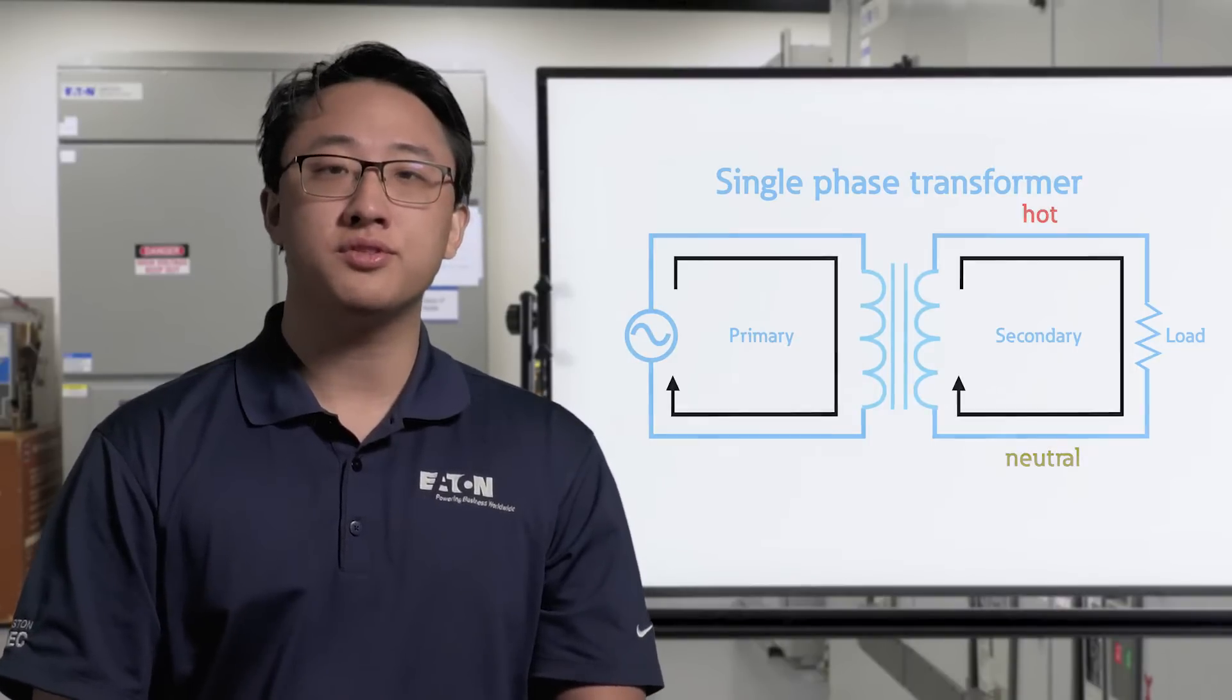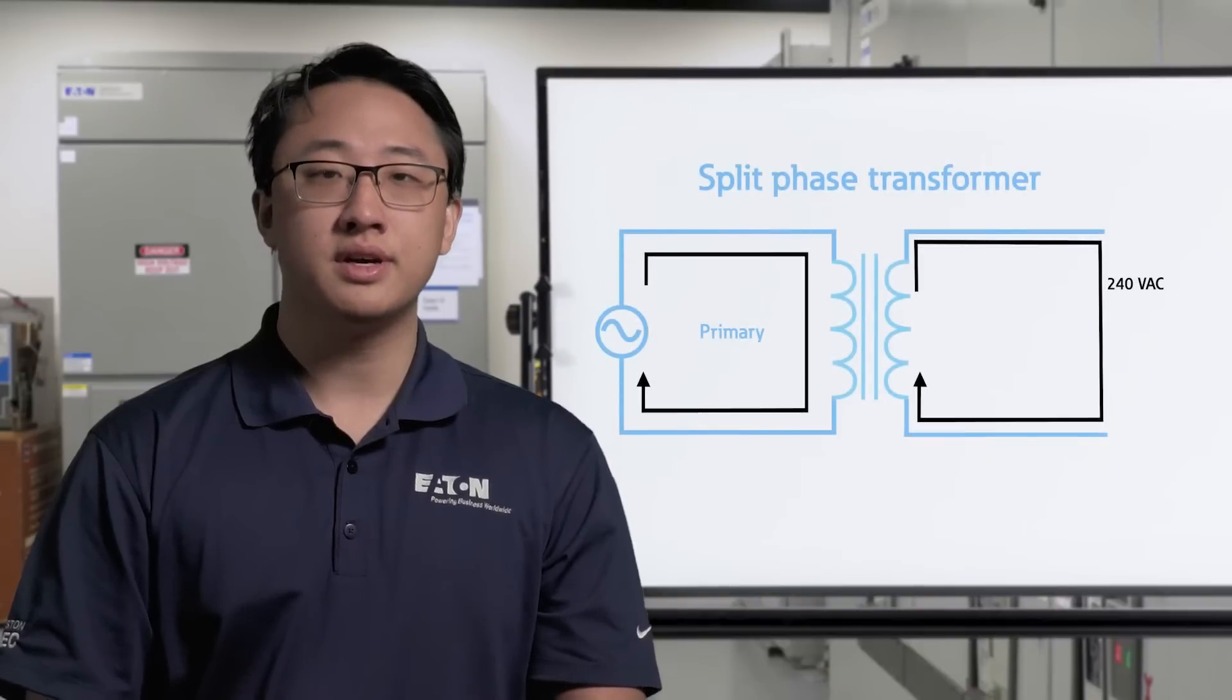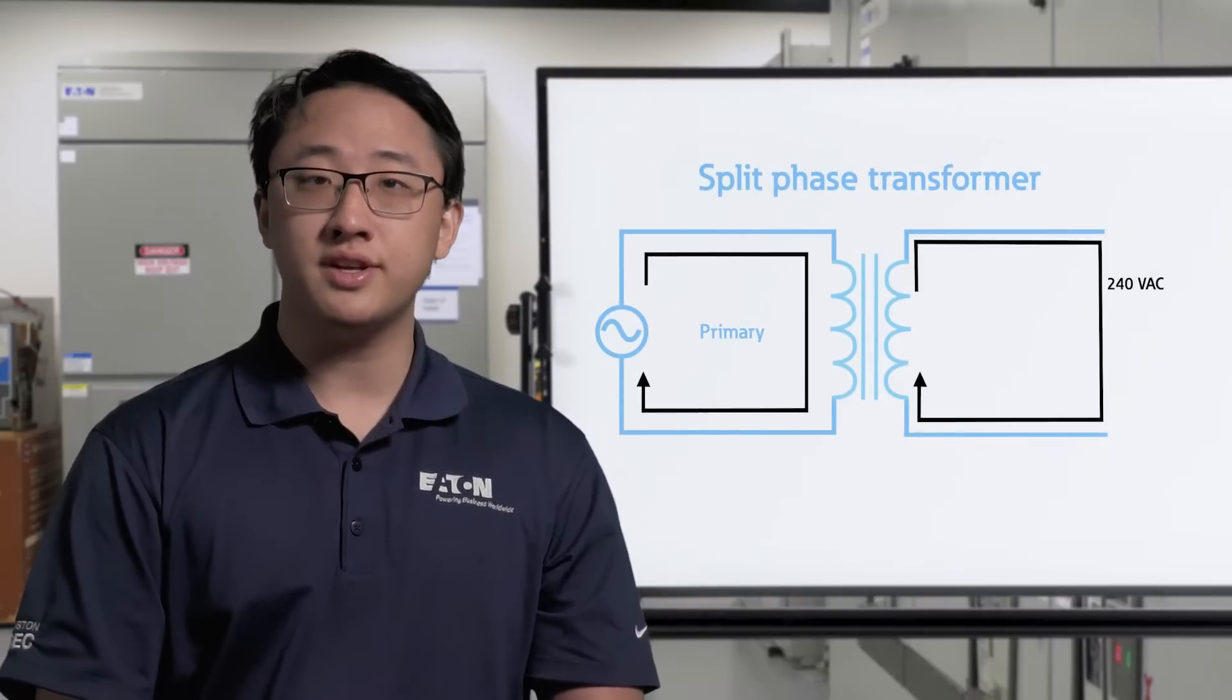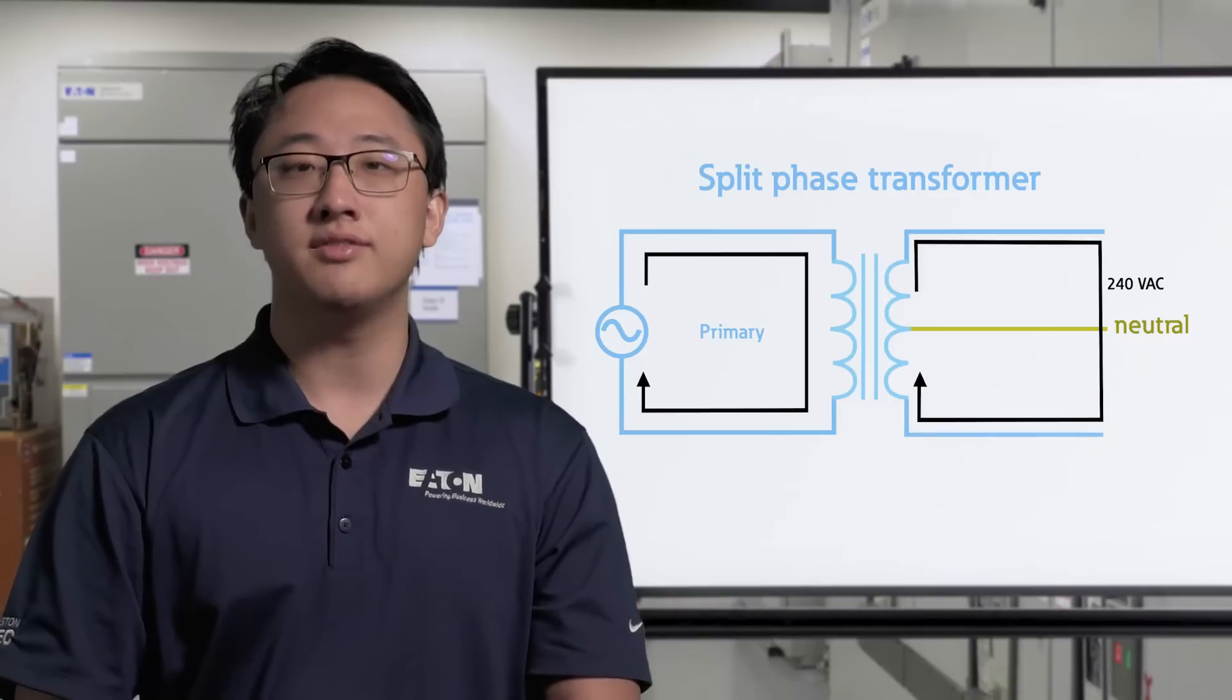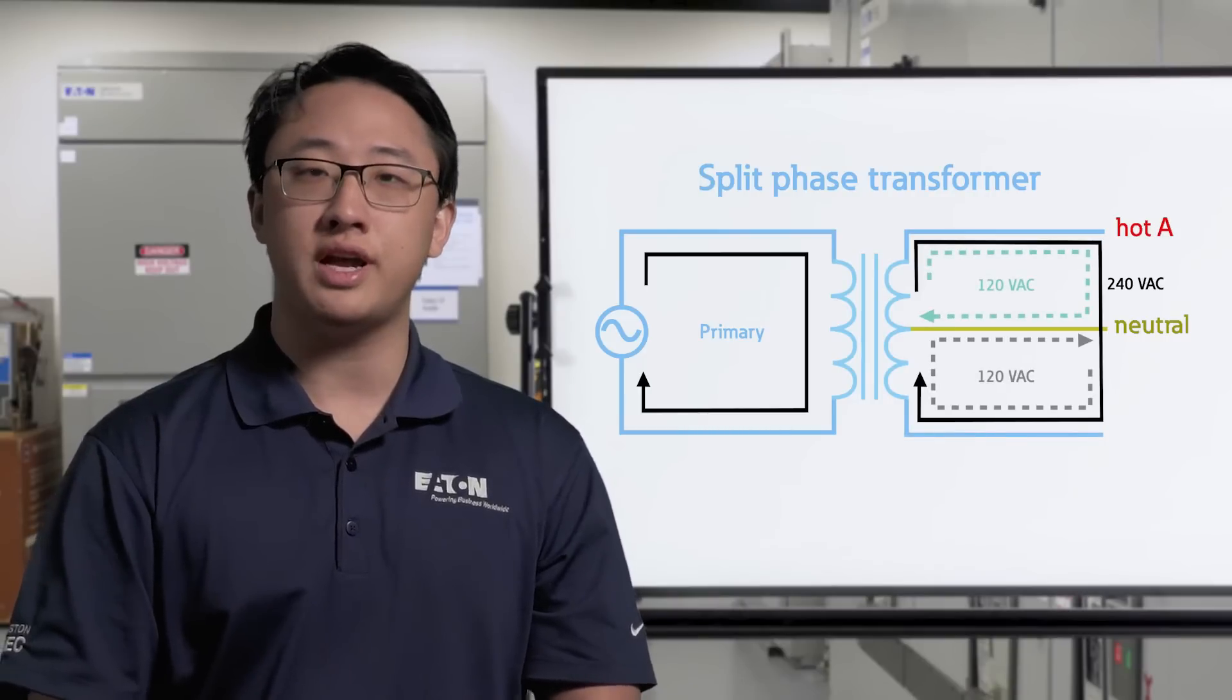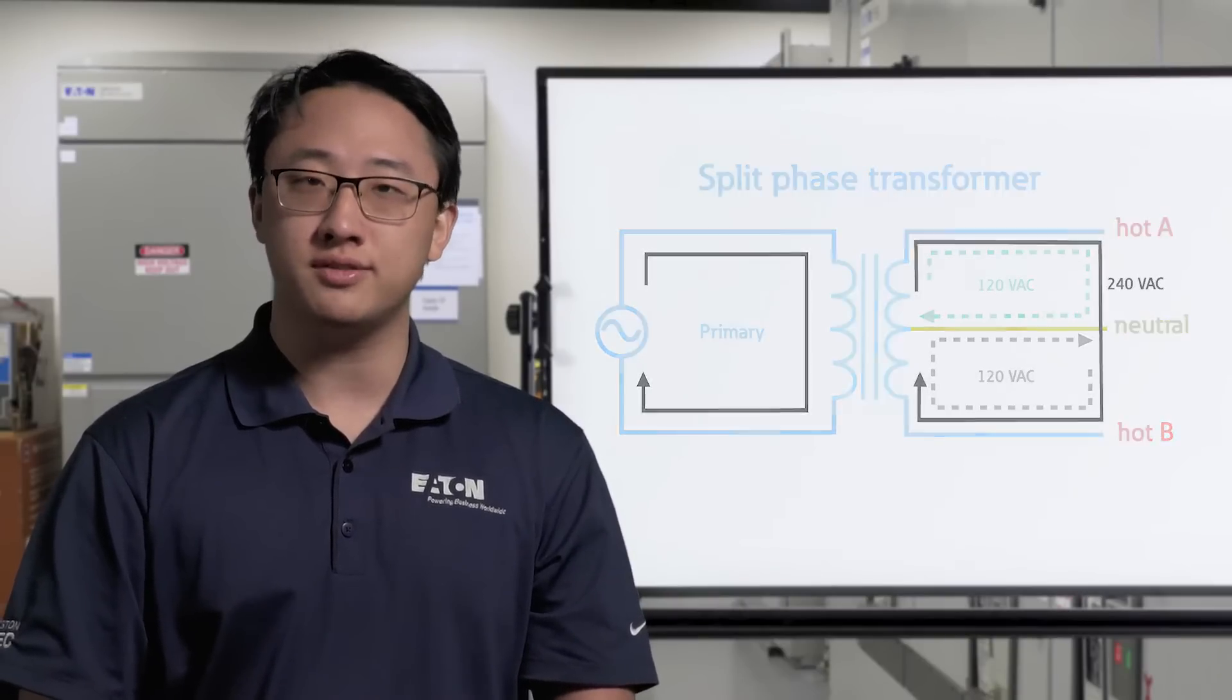Residential systems will use a variation of this single-phase circuit called split-phase. Split-phase will literally split the single phase into half by moving the neutral to the center of the transformer secondary, leaving two separate circuit loops that are 180 degrees out of phase, or one larger loop with twice the voltage.